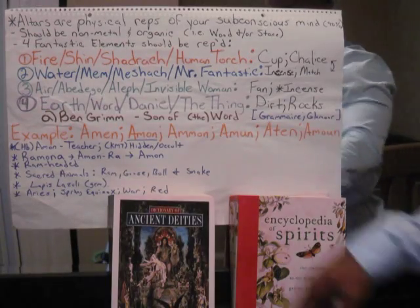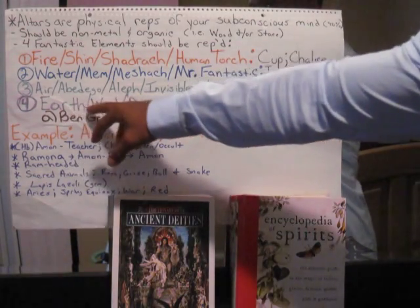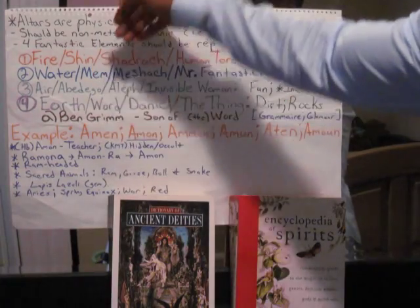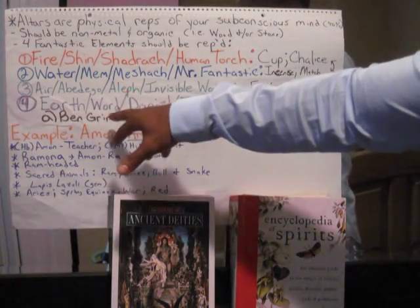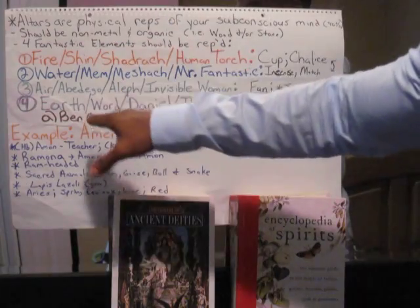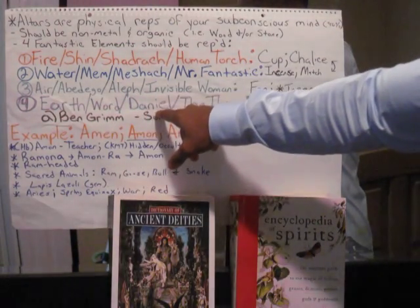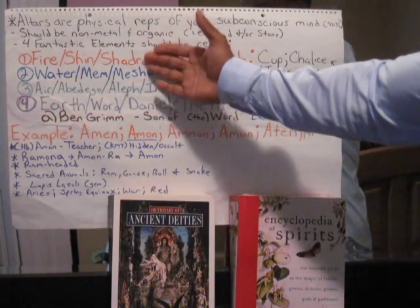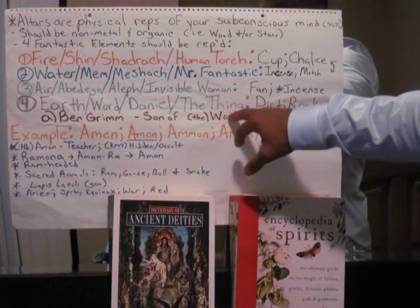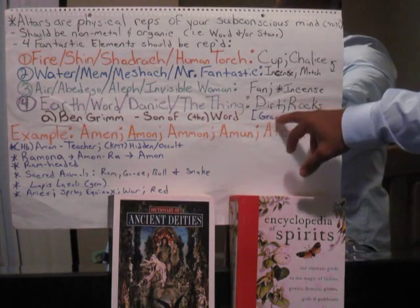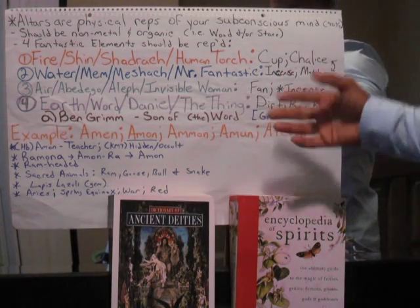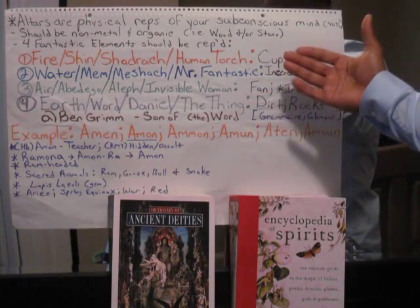The last element is earth. Earth becomes the Word — there's really no Hebrew letter for earth because these three are the primal elements. When they fall to the tenth level on the Kabbalistic Tree of Life, that's what it means about the 'Word becoming flesh.' Those three elements combined produce earth. That was represented by Daniel himself, and in the Fantastic Four by The Thing — a big rock. A sample for earth: rocks, dirt, something from the earth, a statue, or something organic.